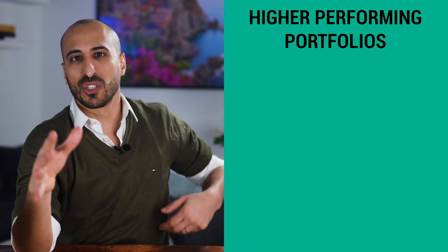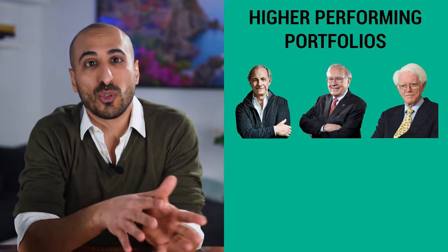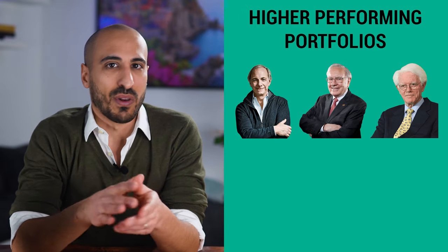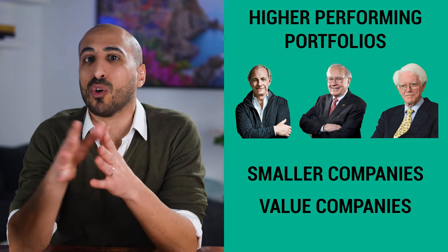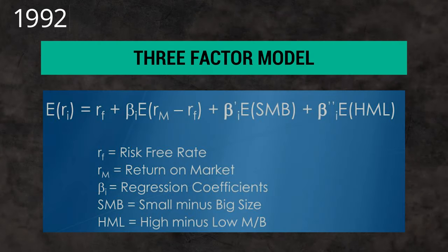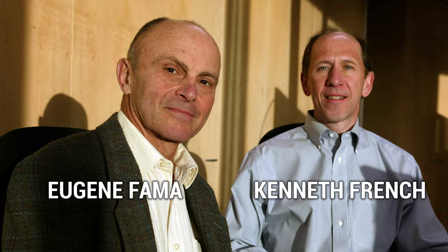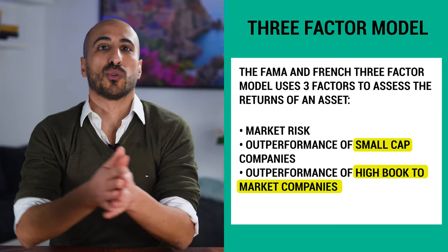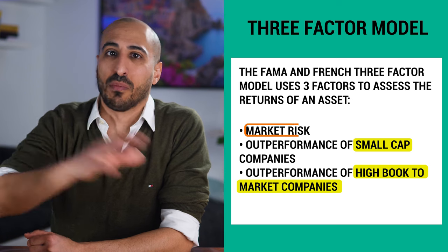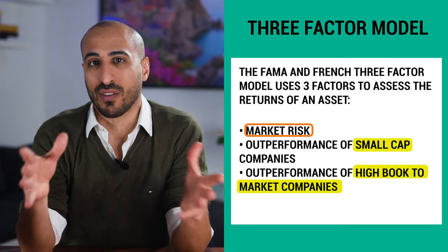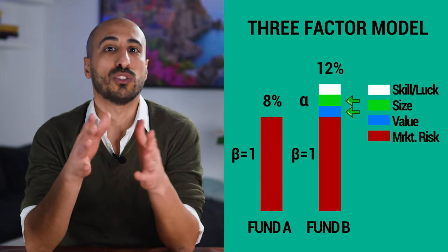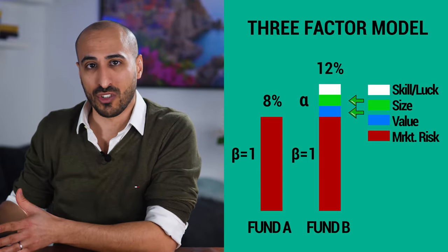What was discovered was that these higher-performing portfolios tended to have higher allocation to companies with certain characteristics — namely smaller companies and value stocks, which are companies with low valuation compared to their fundamentals. In 1992, a model based on the CAPM was developed by Eugene Fama and Kenneth French, suggesting that small-cap and value stocks were exposed to a risk entirely independent from market risk and that they were also independent drivers of return.